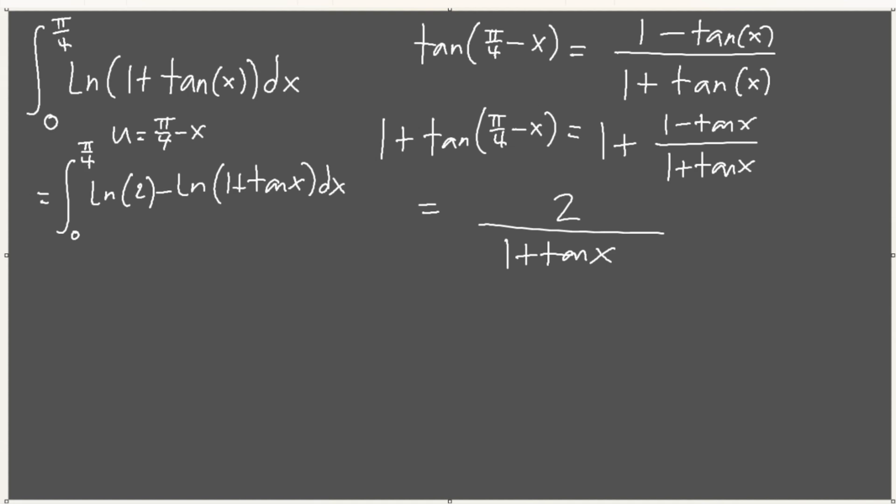So when we apply u equal pi over 4 minus x, we're going to get pi over 4, the ln of 2, minus the ln of 1 plus tangent of x, by log rules. Now we should look at that. If this is equal to i, and this portion is equal to i, we technically have i equals pi over 4 ln of 2 minus i. Right? That's literally what we have. So then 2i, integrate this, this is just pi over 4 ln of 2.